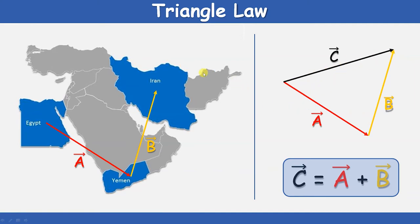That is to say, the triangle law states: if the two adjacent sides of a triangle represent two vectors both in magnitude and direction taken in order, then the closing side of the triangle in the reverse order gives the resultant vector. So vector C is the vector sum of vector A and vector B.